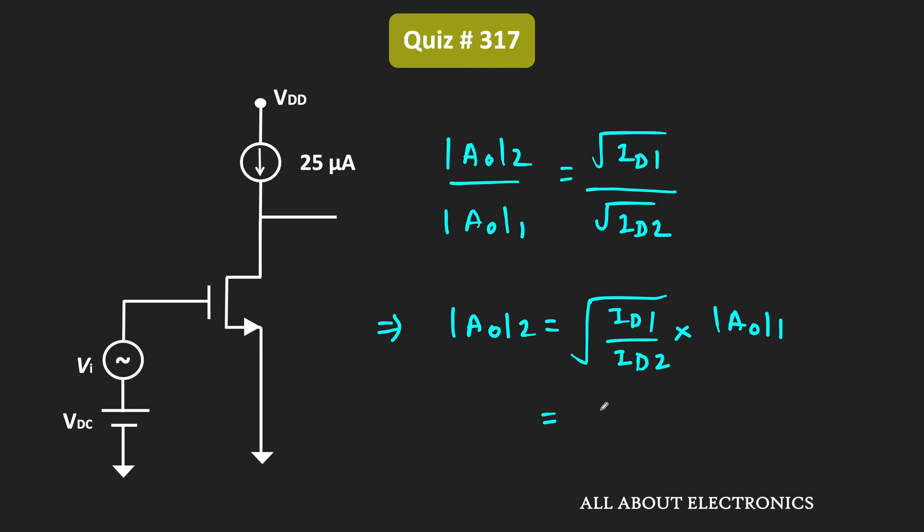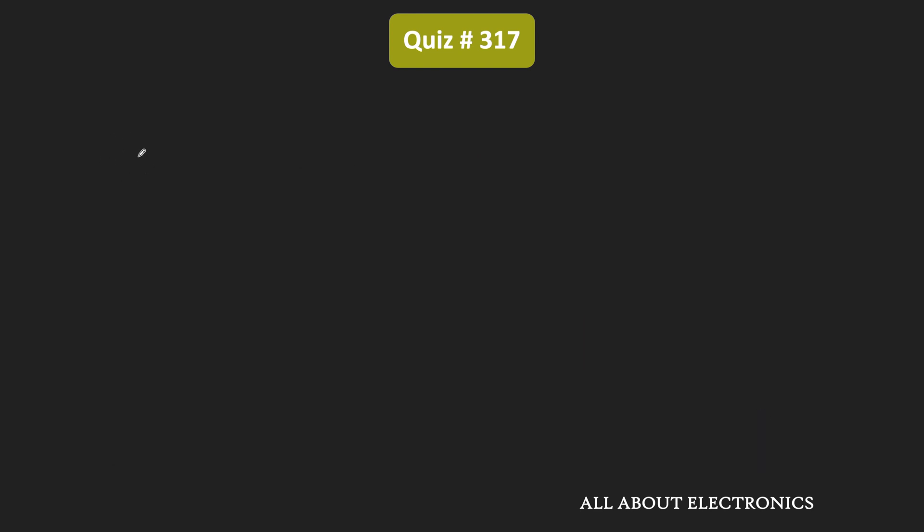Now this Id1 is equal to 100 microampere while the new bias current is equal to 25 microampere. And we have been given that when the bias current is equal to 100 microampere, then this A01 or this intrinsic gain is equal to 80. That means whenever this bias current is equal to 25 microampere, then this new intrinsic gain will be equal to 80 times √ of 4 that is equal to 160.